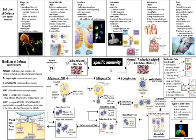When that B cell is activated, it will do two things: it will make memory cells, and it will make more active cells. In this case, the active cells are called plasma cells, and the plasma cells will make antibodies.